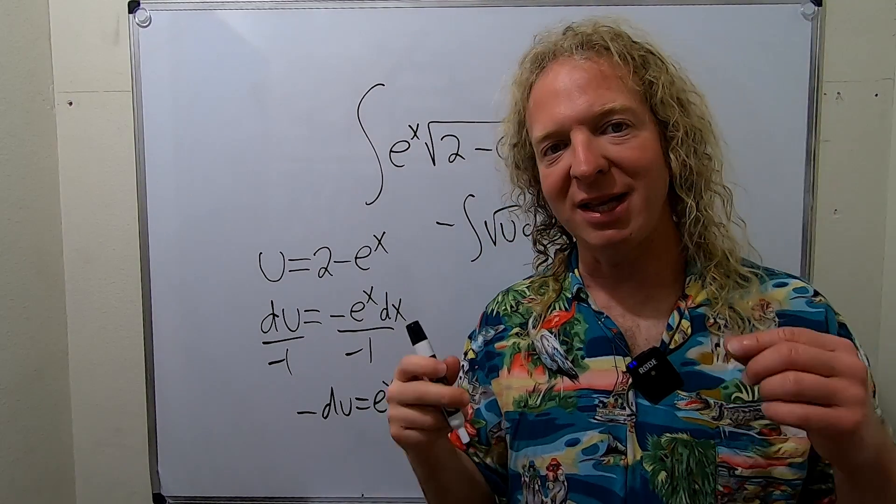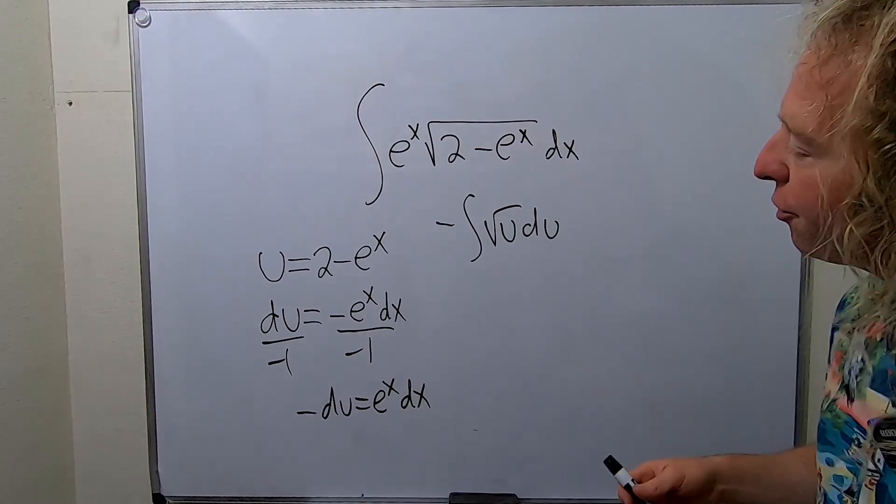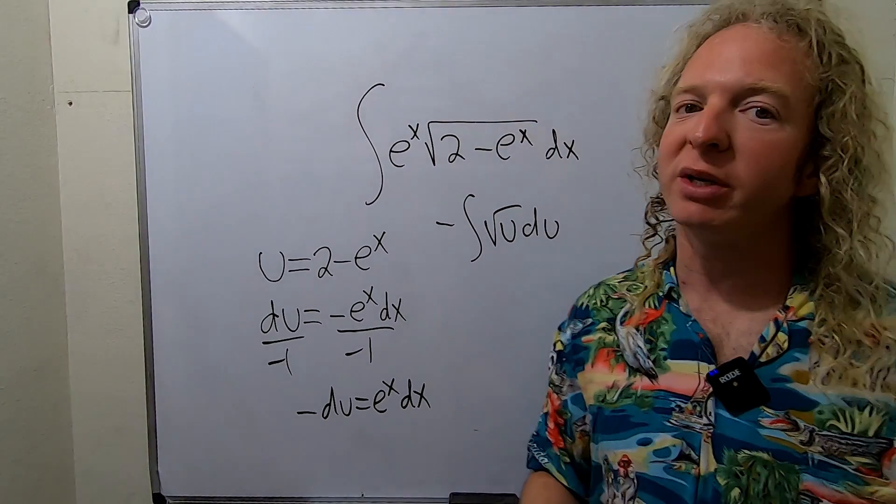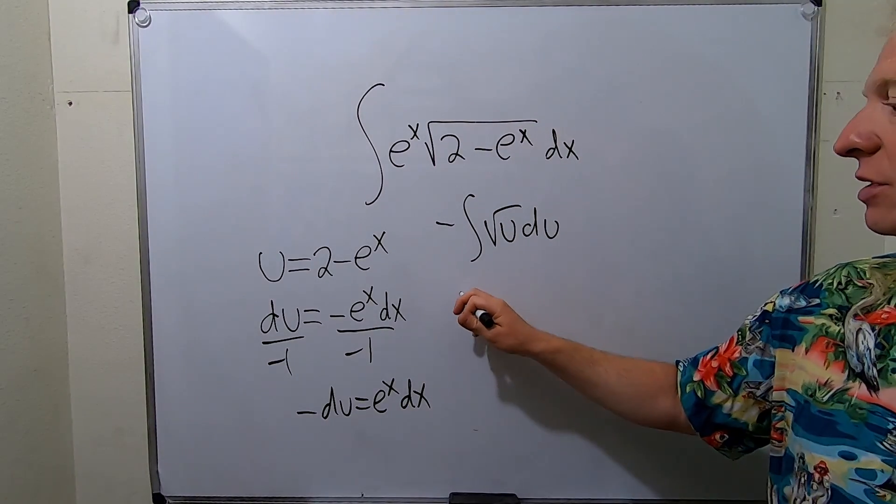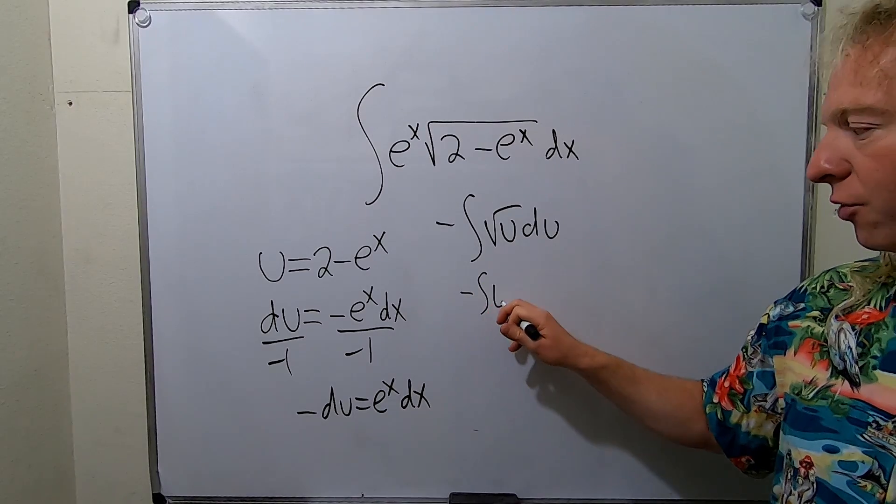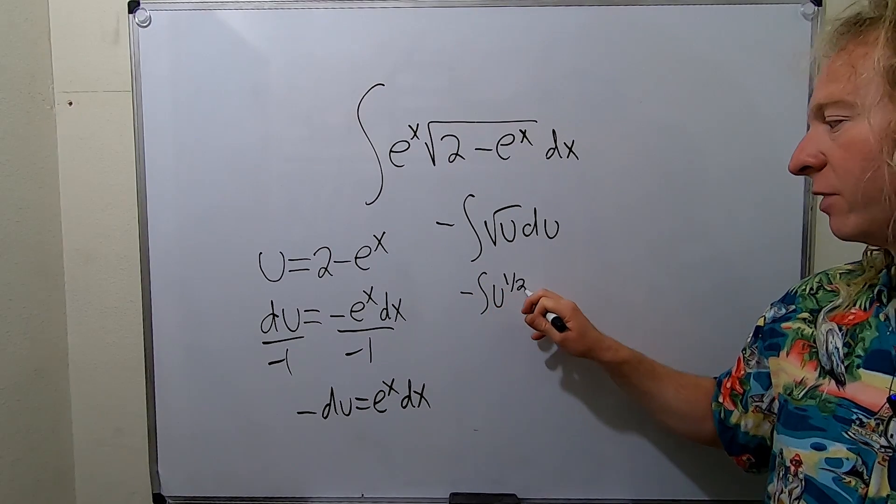To do this we want to write this as u to a power. Remember the square root can be written as u to the 1 half. So this is negative integral u to the 1 half du.